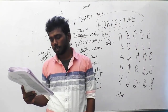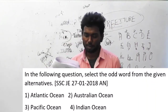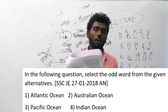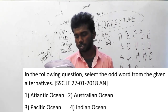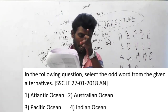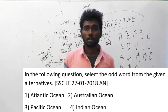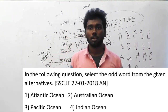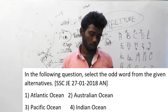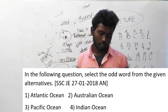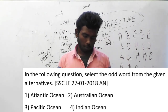Question 157. In the following question, select the odd word from the given alternatives. Options are: Atlantic Ocean, Australian Ocean, Pacific Ocean, Indian Ocean. Atlantic Ocean, Pacific Ocean, and Indian Ocean are major oceans. Australian Ocean is not a major ocean — it doesn't come under the major ocean category. So Australian Ocean is the odd option. The answer for question 157 is option B, Australian Ocean.